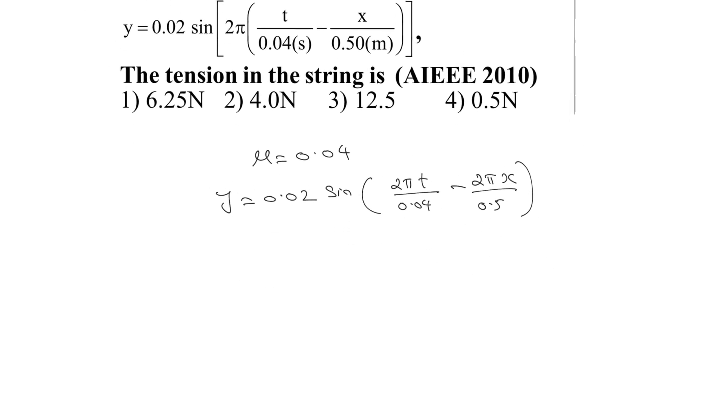Comparing it with the equation y = A sin(ωt - kx), we get the value of ω = 2π/0.04 and the value of k = 2π/0.5.